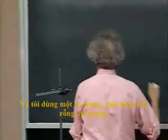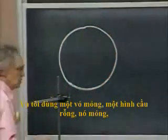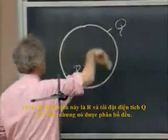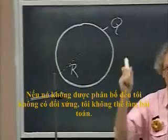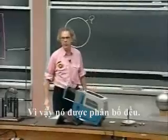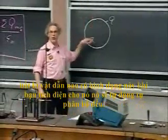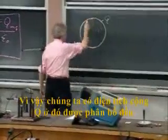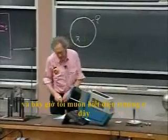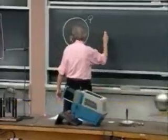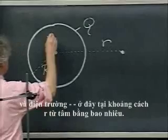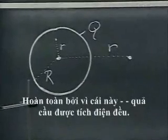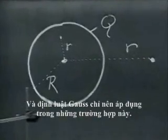I will use a thin shell — a hollow sphere which is thin — with radius R. I put charge Q on it, uniformly distributed. That's crucial: if it's not uniformly distributed, there is no symmetry and I can't do the problem. We will learn later that any conductor of this shape, when you bring charge onto it, will automatically distribute itself uniformly. I would like to know what is the electric field at a distance r outside the sphere, and what is the electric field inside, just due to this uniformly charged sphere. With Gauss's law it goes quickly, but you have to choose your Gaussian surface wisely.